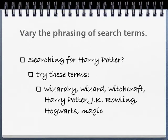When you're searching, it's important that you vary the phrasing of your search terms. For example, if I was searching for Harry Potter, I wouldn't just say 'Harry Potter.' I would search for things like wizardry, wizard, witchcraft, Harry Potter, JK Rowling, Hogwarts, magic, and other things associated with Harry Potter. You might find that varying your search terms will help you find more specific things that you want, and you'll be able to weed out the pieces that aren't so helpful.